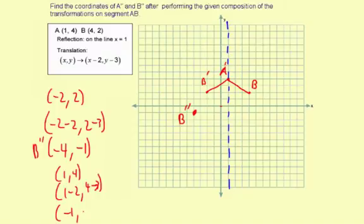So that's going to be negative 1, comma 1 for A double prime. So A double prime will be right here.